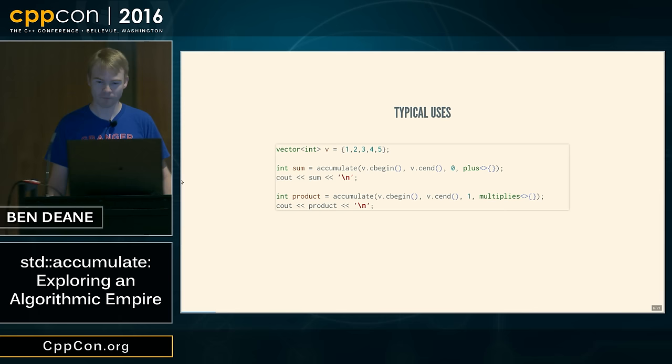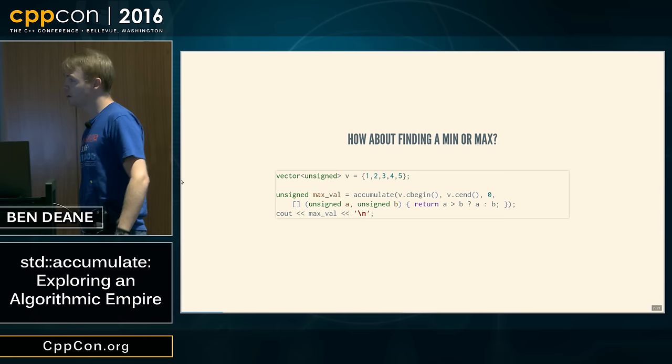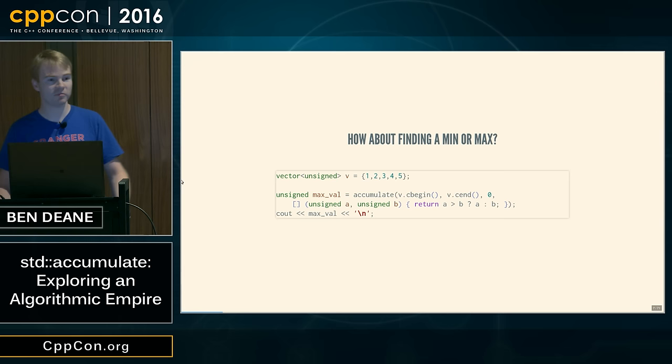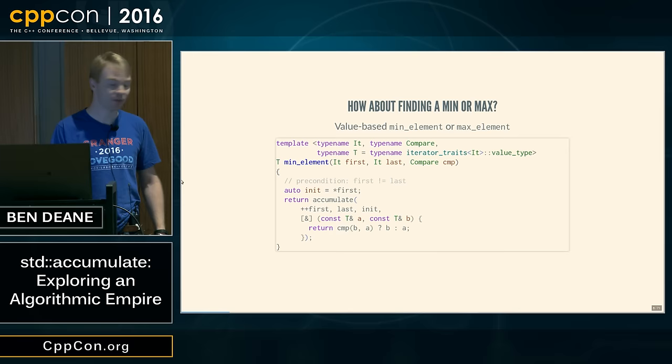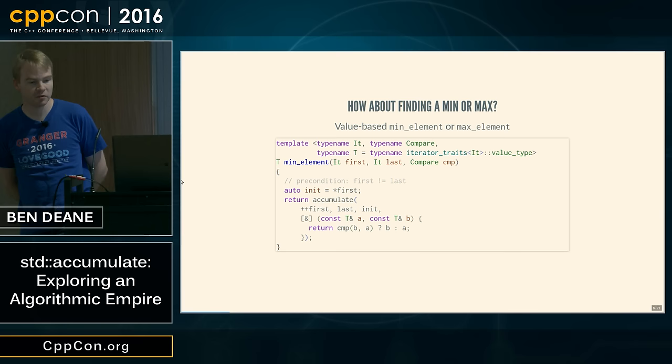But what else can we do? Something else very simple we can do is compute a maximum value. Again, you're all here at CppCon so you all know this. We could write min element in a value-based sense and do something like this. We could also do things like accumulating boolean values. This is very similar to the all_of, any_of, and none_of in the library, except without the nice shortcut behavior.